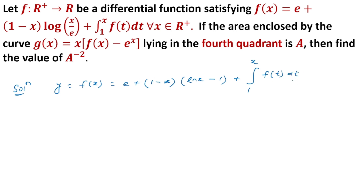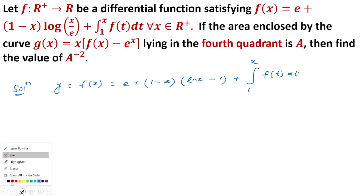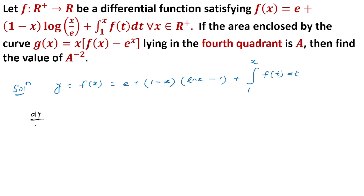We differentiate this equation using the Leibniz rule: f of upper limit times differentiation of upper limit, minus f of lower limit times differentiation of lower limit. The lower limit is 1, which is constant, so its derivative is 0. We use the Leibniz rule to find dy/dx, that is f'(x).